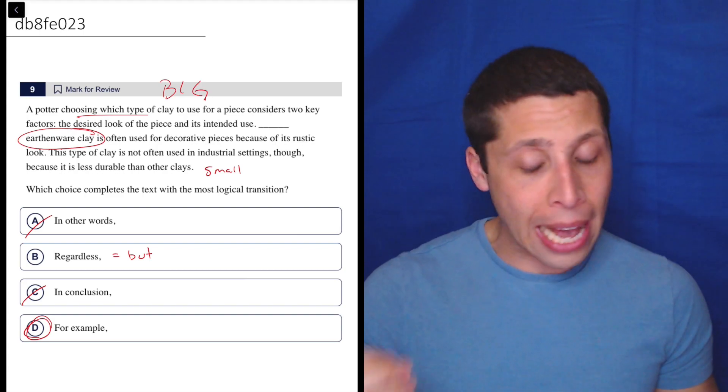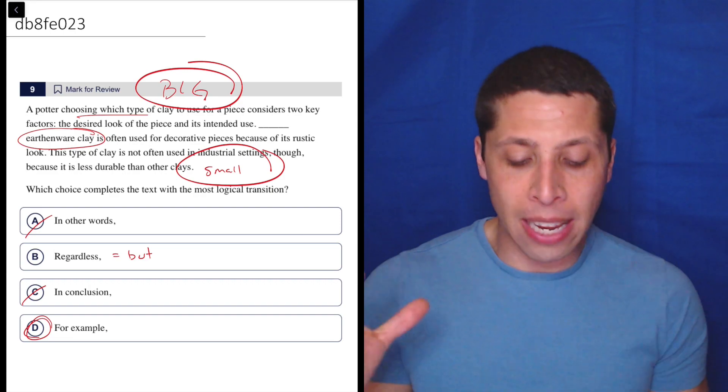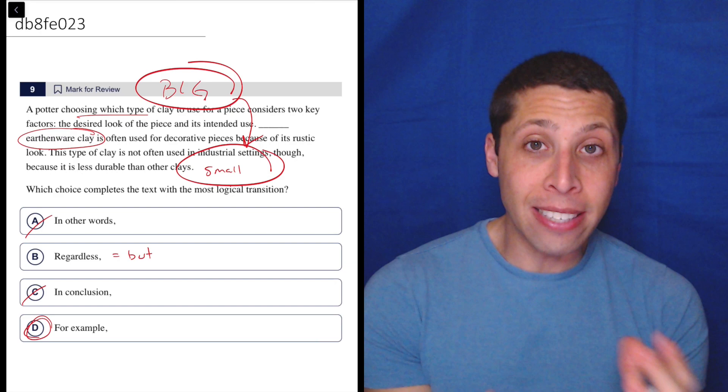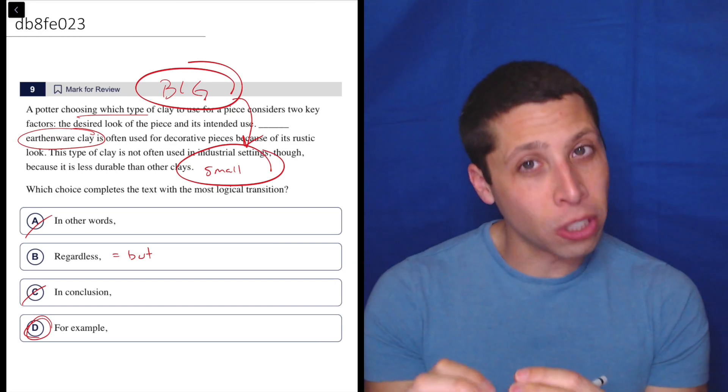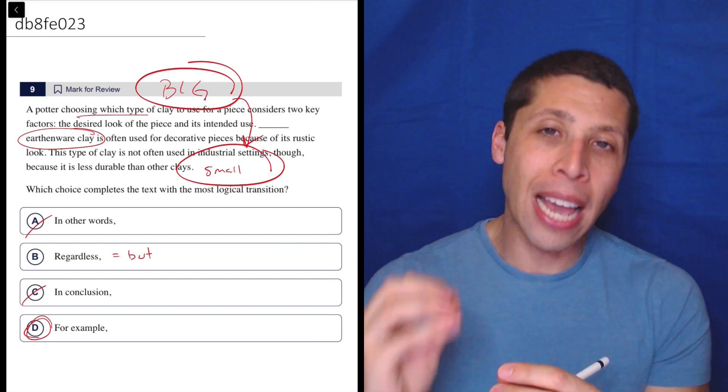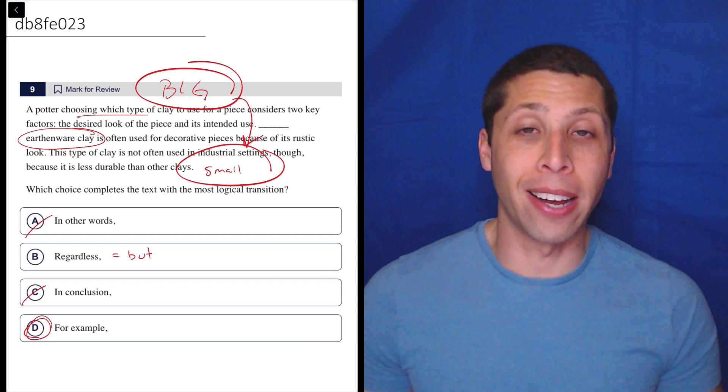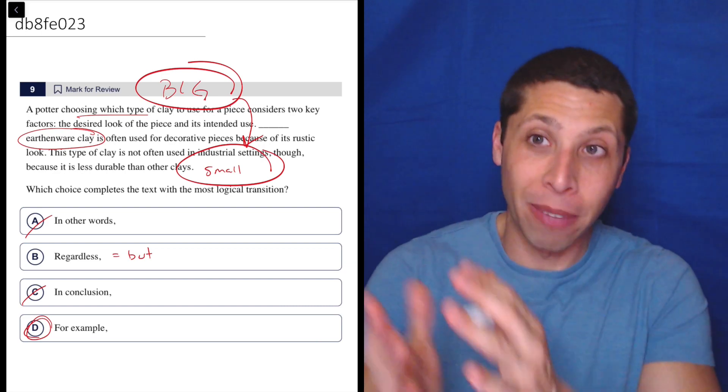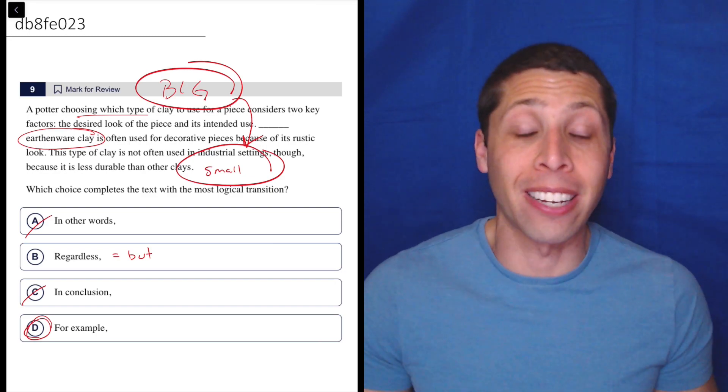But if you have trouble with that, I do recommend thinking of examples as this kind of transition between a big claim, a big idea, and some smaller version of that. It's the same idea, but it's getting more specific. And that's why examples are very common—it's a common way of making a point, making an argument. So we're going to see it a lot on the SAT.